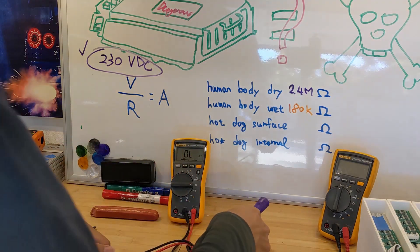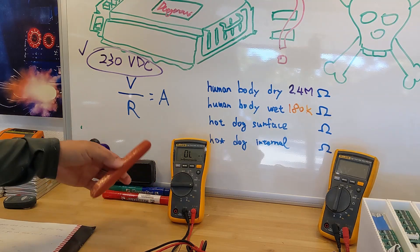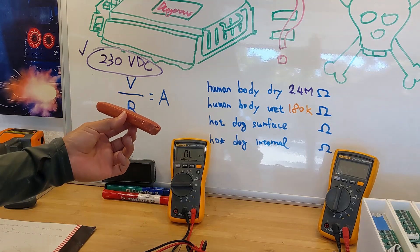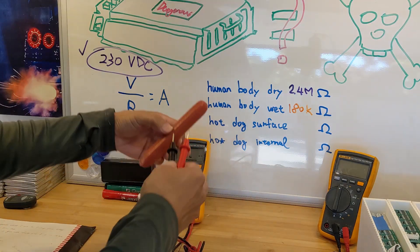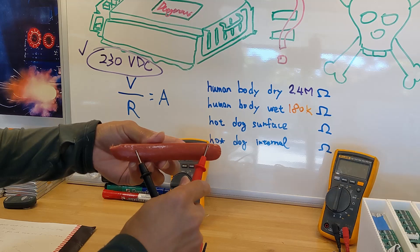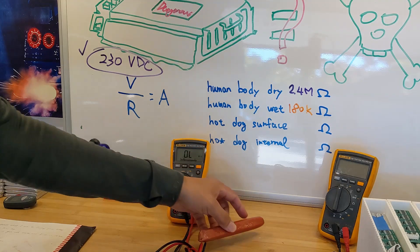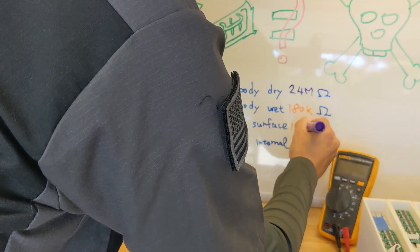And then let's simulate the situation where you have a hot dog touching the positive and negative. On the surface, let's take a look - it has 190. Pretty similar to the repair shop wet condition.